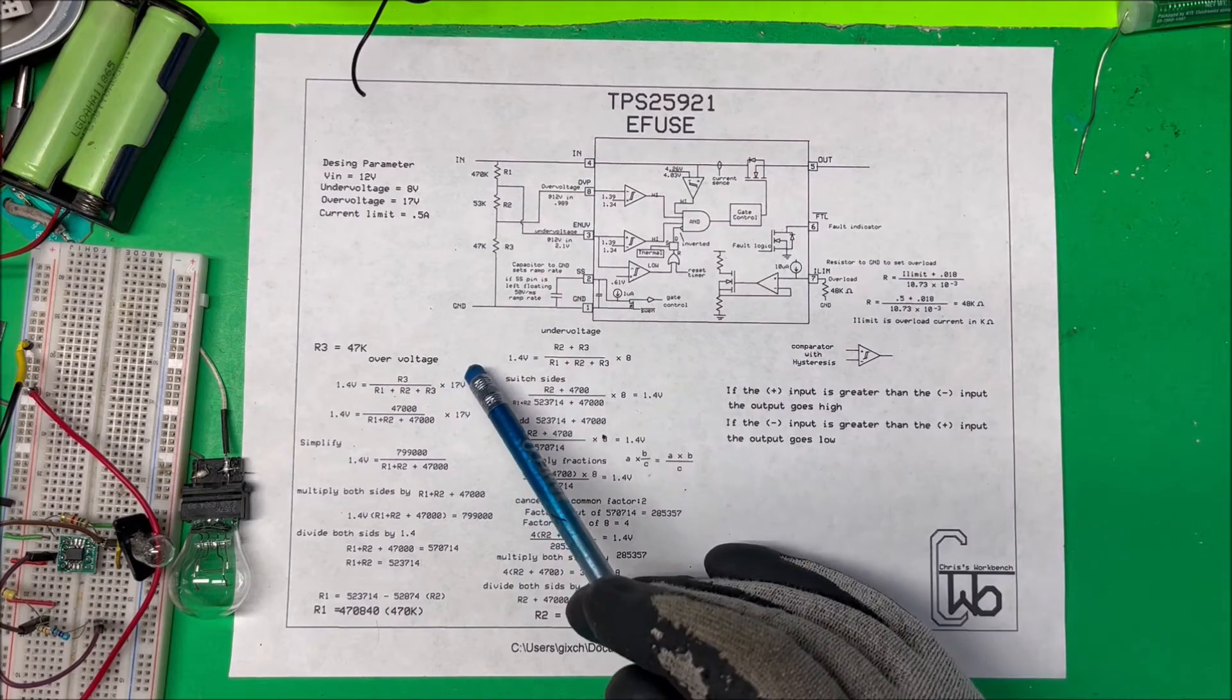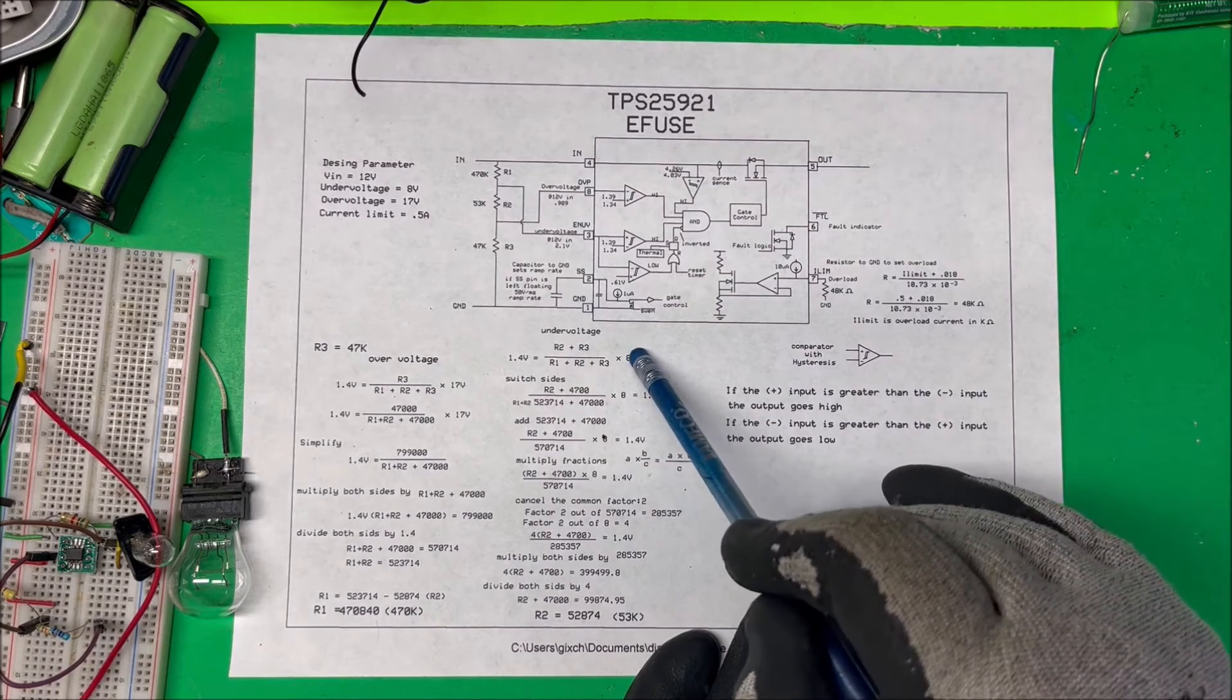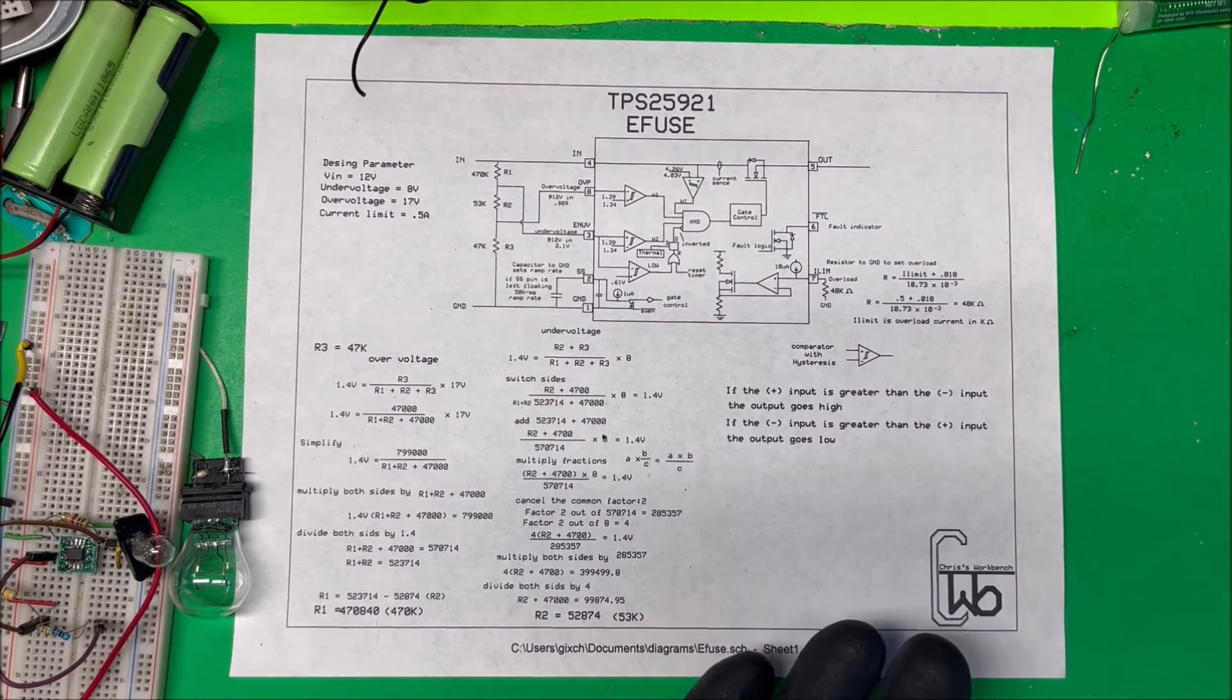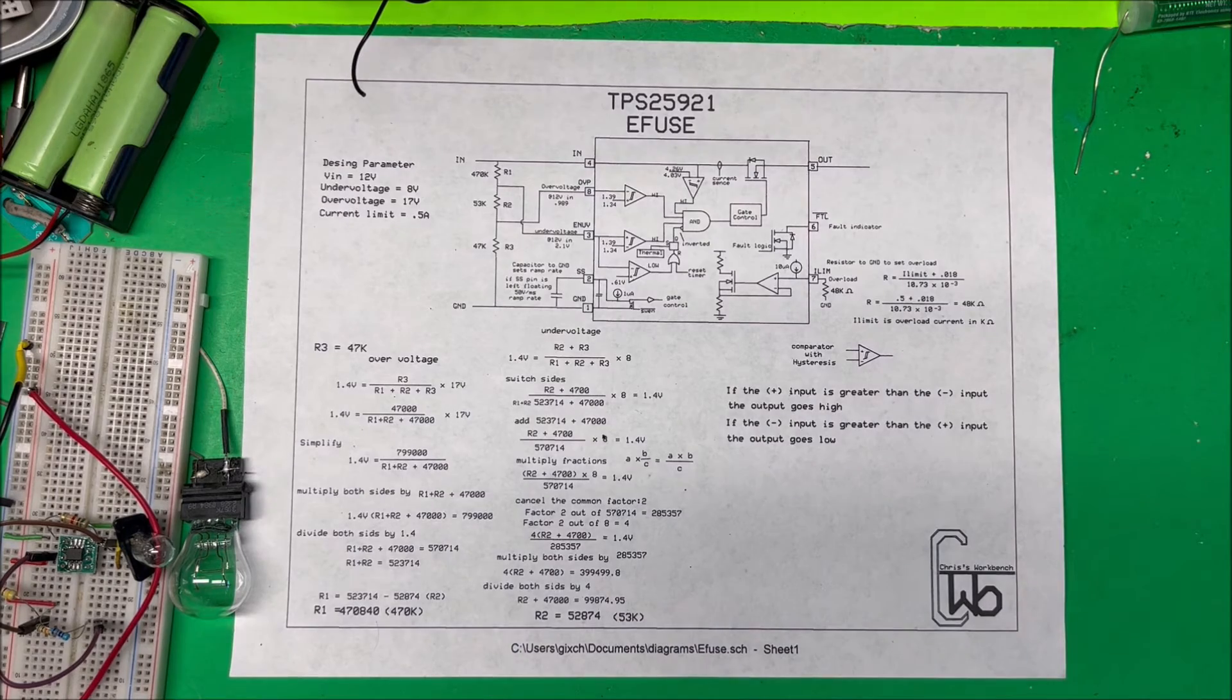That's how we calculate our values. If you want to change the voltage, if you want to turn it off at 14 volts you put 14 in there. If you want the undervoltage to be at 10 volts, you put 10 in there. That's how that's going to work. We're going to give it a try.